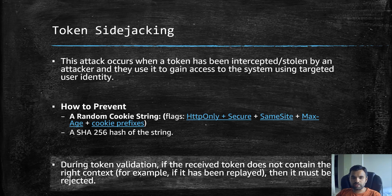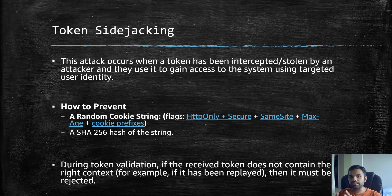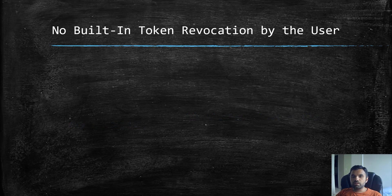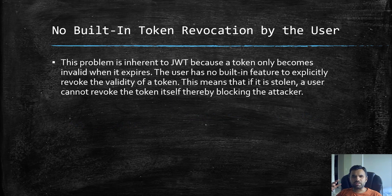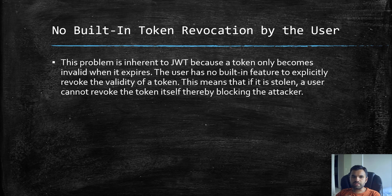During token validation, if the received token does not contain the right context — for example, if it has been replayed — you can reject it. That's the easiest way to prevent token sidejacking. A core problem inherent to JWT is that the token only becomes invalid when it expires, unlike traditional applications where logging out invalidates the cookie.